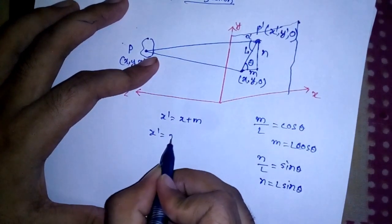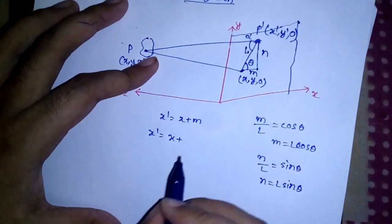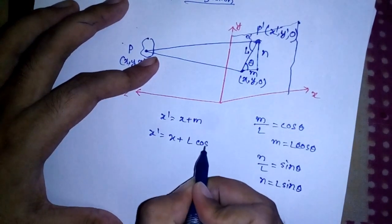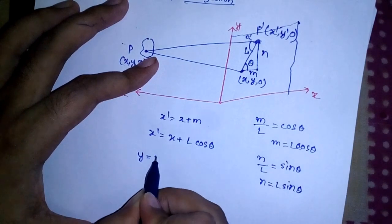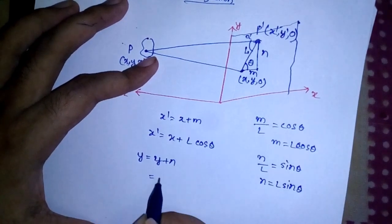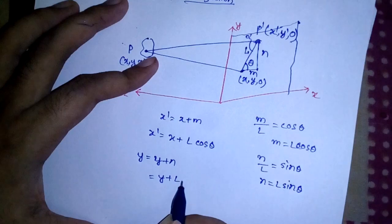Now X dash will be nothing but X plus L cos theta, and Y dash is nothing but Y plus N, that is Y plus L sin theta.